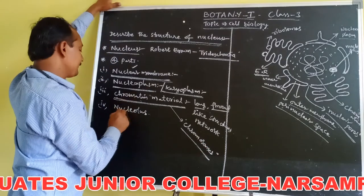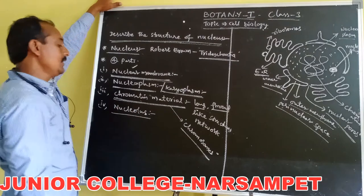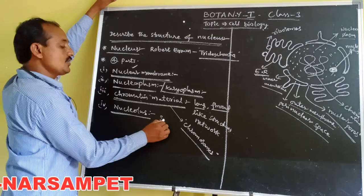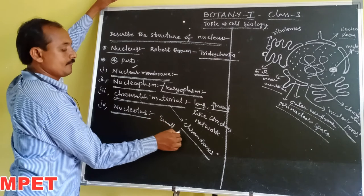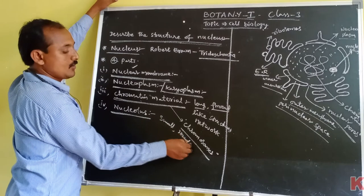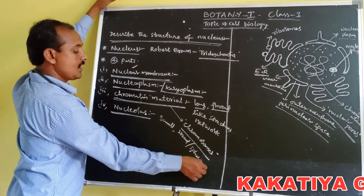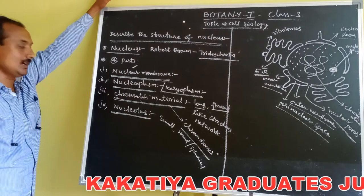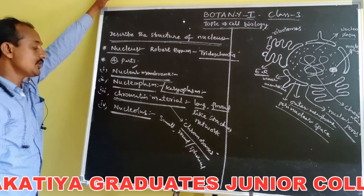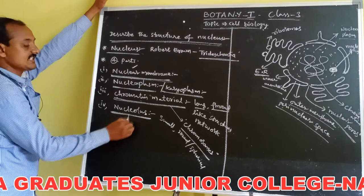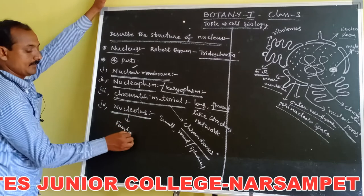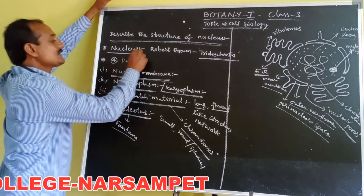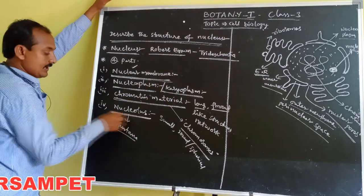The last part is nucleolus. It is a small, round or spherical shaped structure present in the nucleoplasm. Nucleolus was discovered by Fantana. The nucleus was discovered by Robert Brown.